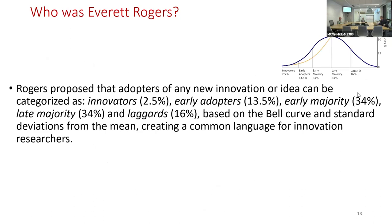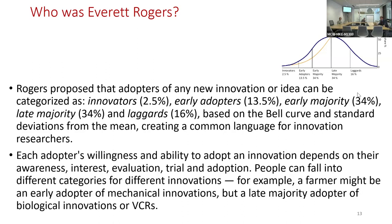Rogers was the one who came up with the adoption curve, dividing individuals into innovators at 2.5%, early adopters about 15.5%, early majority at around the median, late majority after that, and laggards. He created with these terms—innovators, early adopters, late adopters—a common language and common terminology for innovation research.